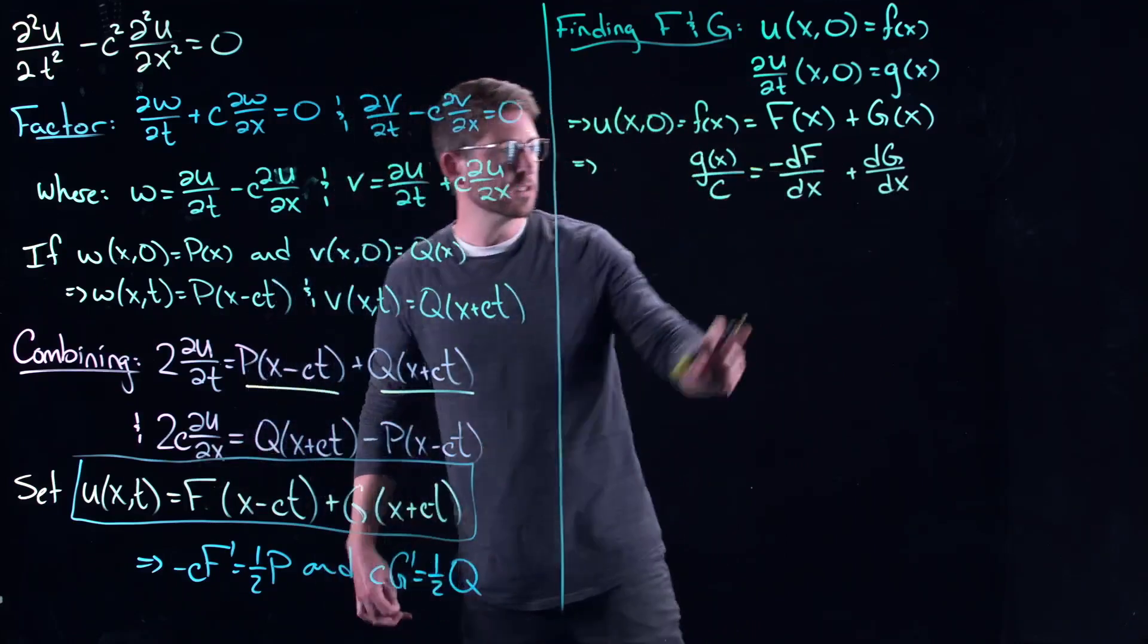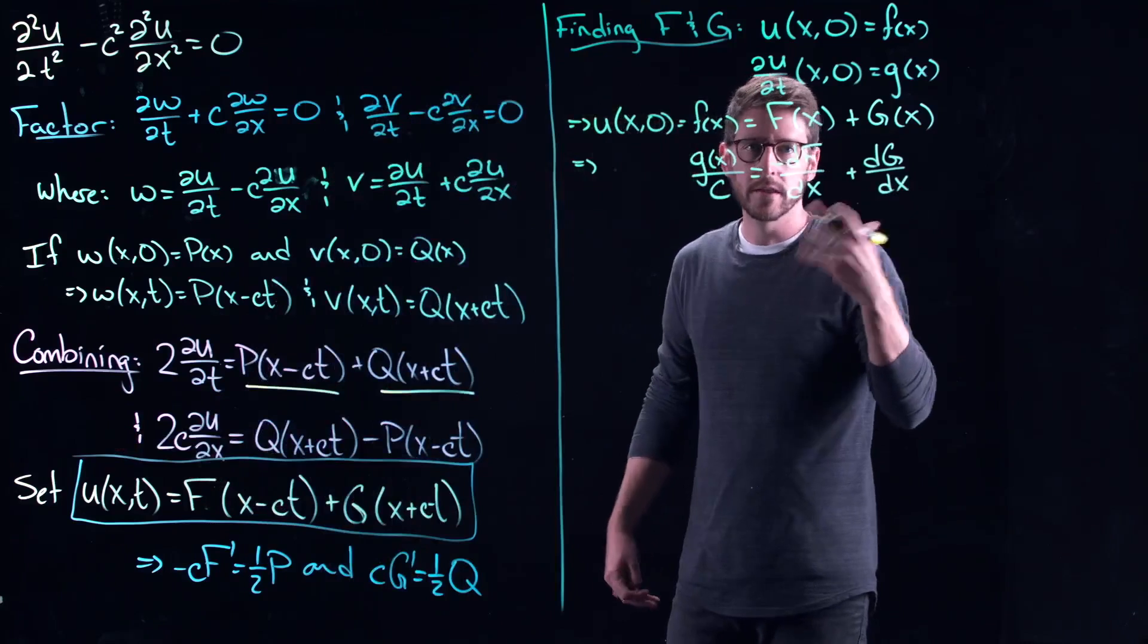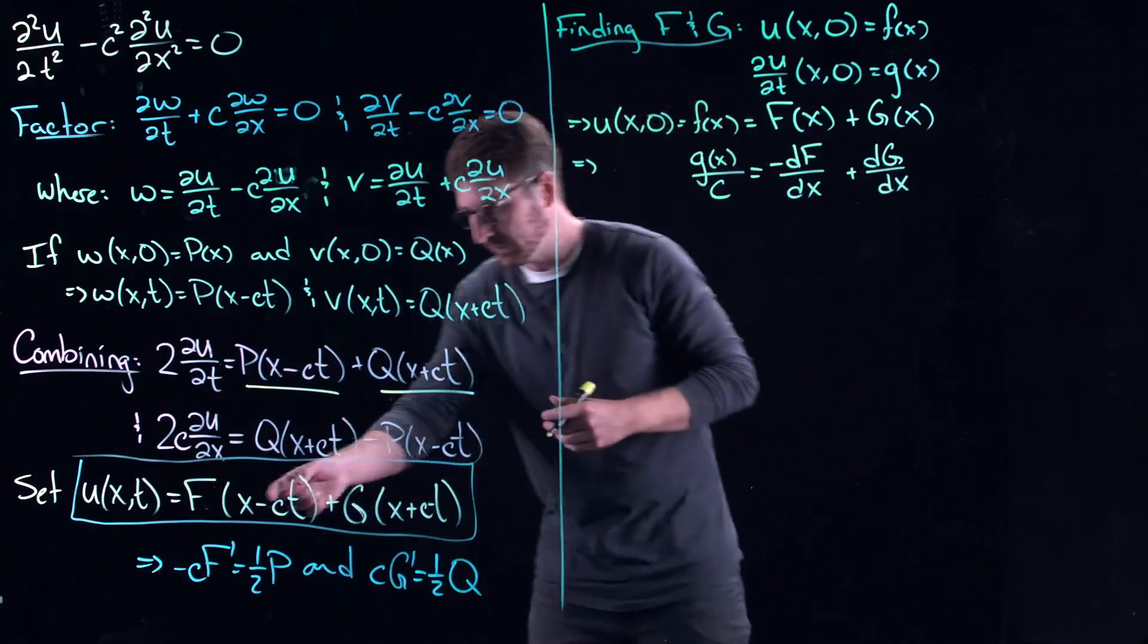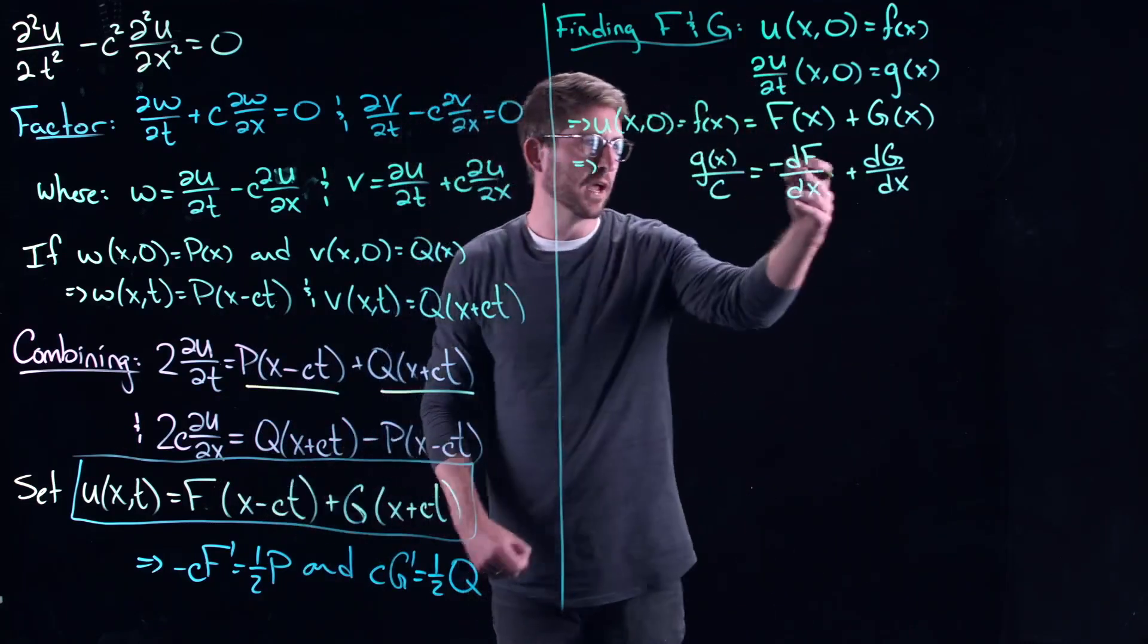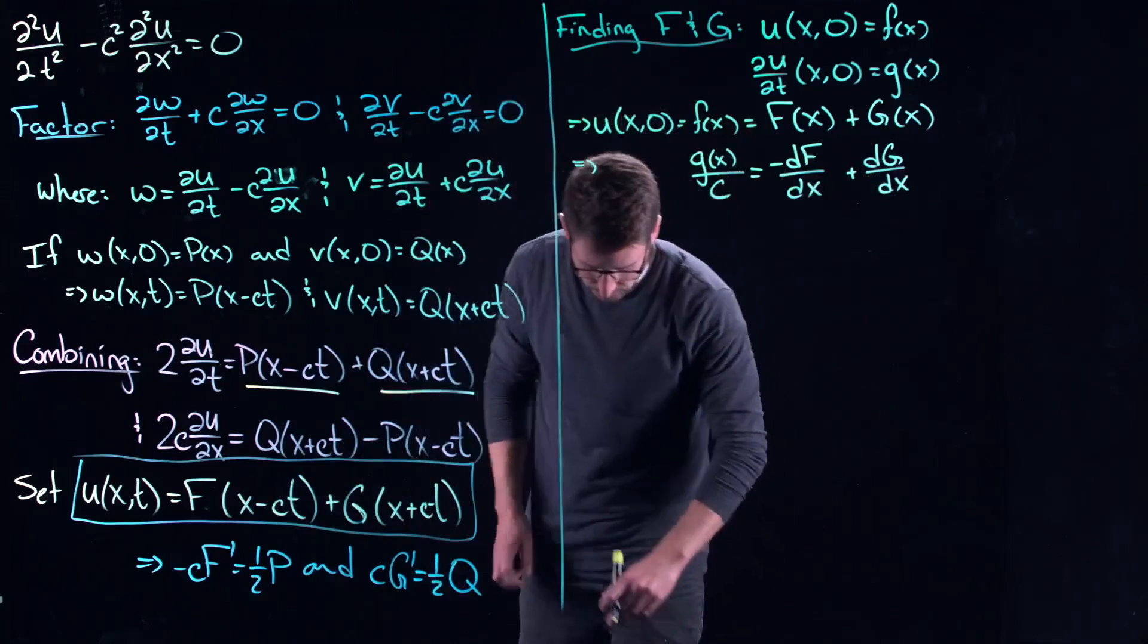F and G, they're single-valued functions. I'm just using X to represent their initial argument. But you can just put F prime and G prime in here if it makes you a little bit more comfortable.